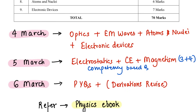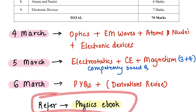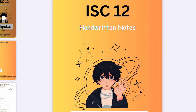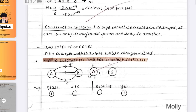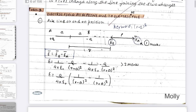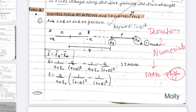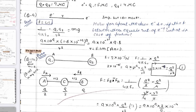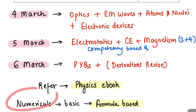A lot of students have not made notes and want notes at this point. You can refer to my physics ebook available on the website Molly Ebooks — I'll also add the link in the description box. These handwritten notes cover derivations, numericals, and notes for all chapters, along with definitions of important terms. It's an all-in-one ebook and if you want to purchase it you can buy it from the link in the description.